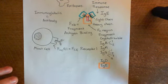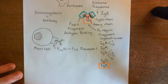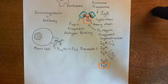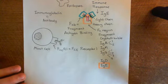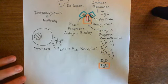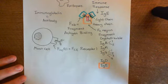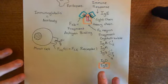These IgE molecules will bind to the FC-epsilon-R1 receptors on the surface of the mast cells, mounting IgE tailored against the allergen on the surface of the mast cells in the lamina propria. This IgE will remain here for months before it is removed.